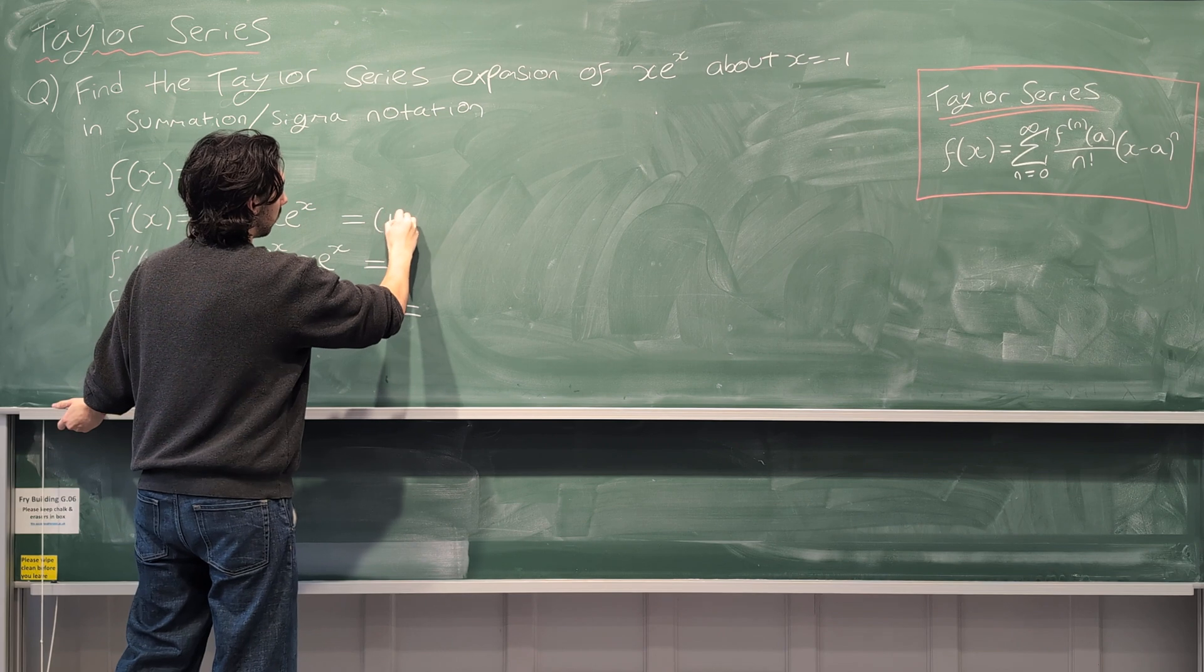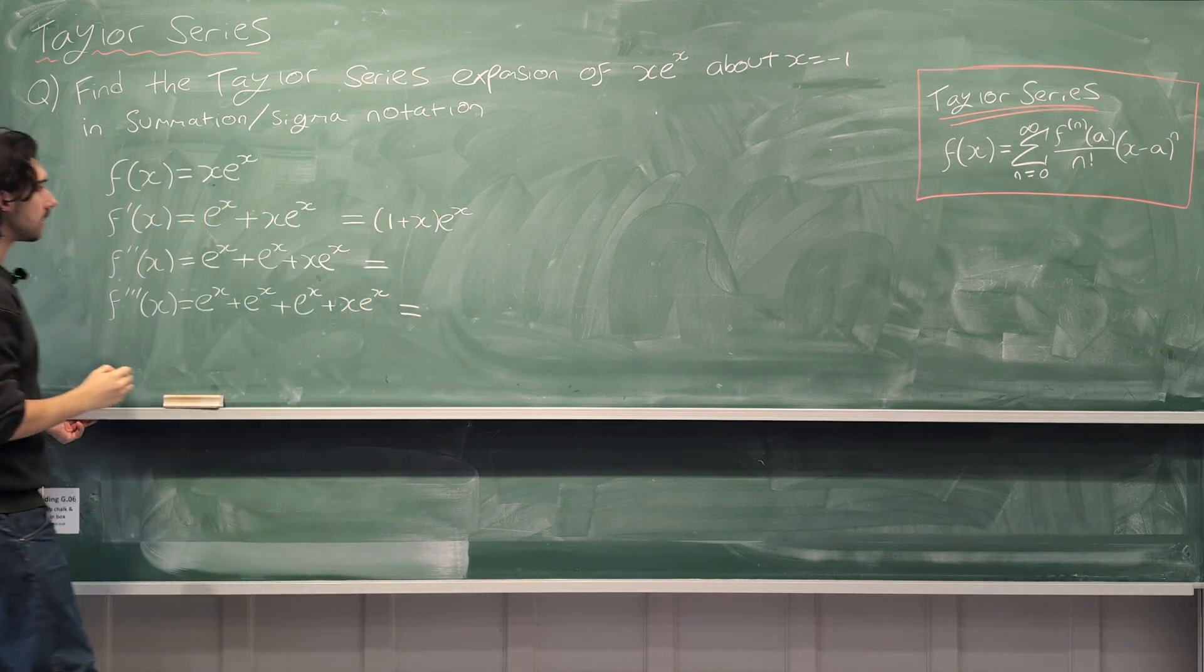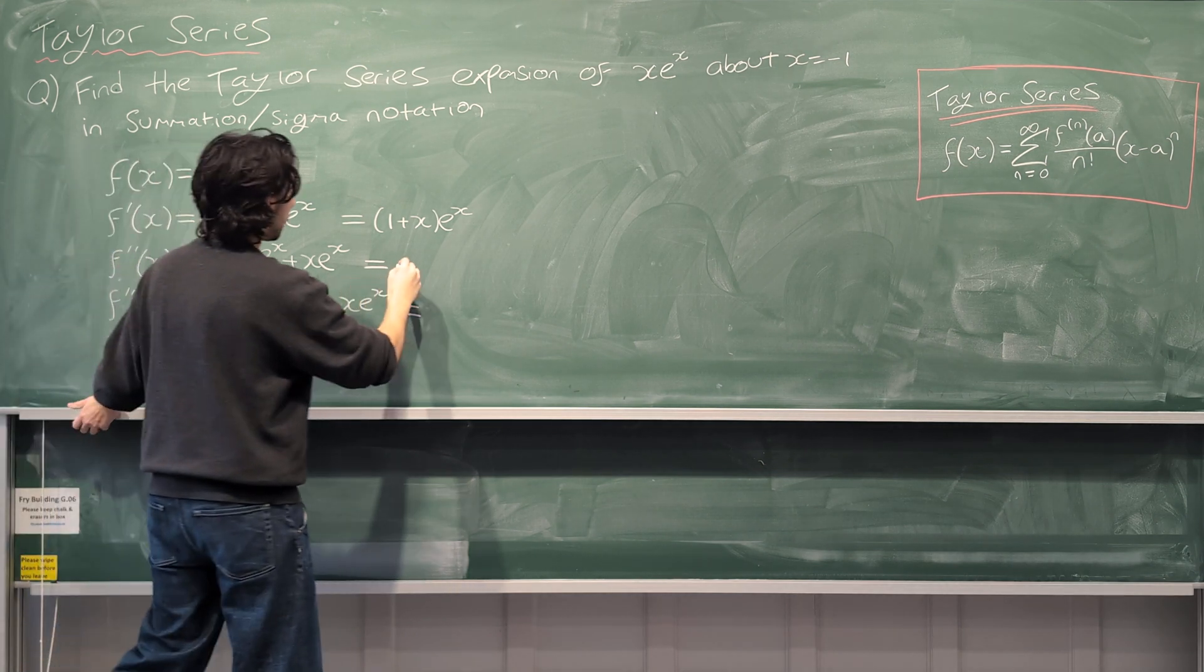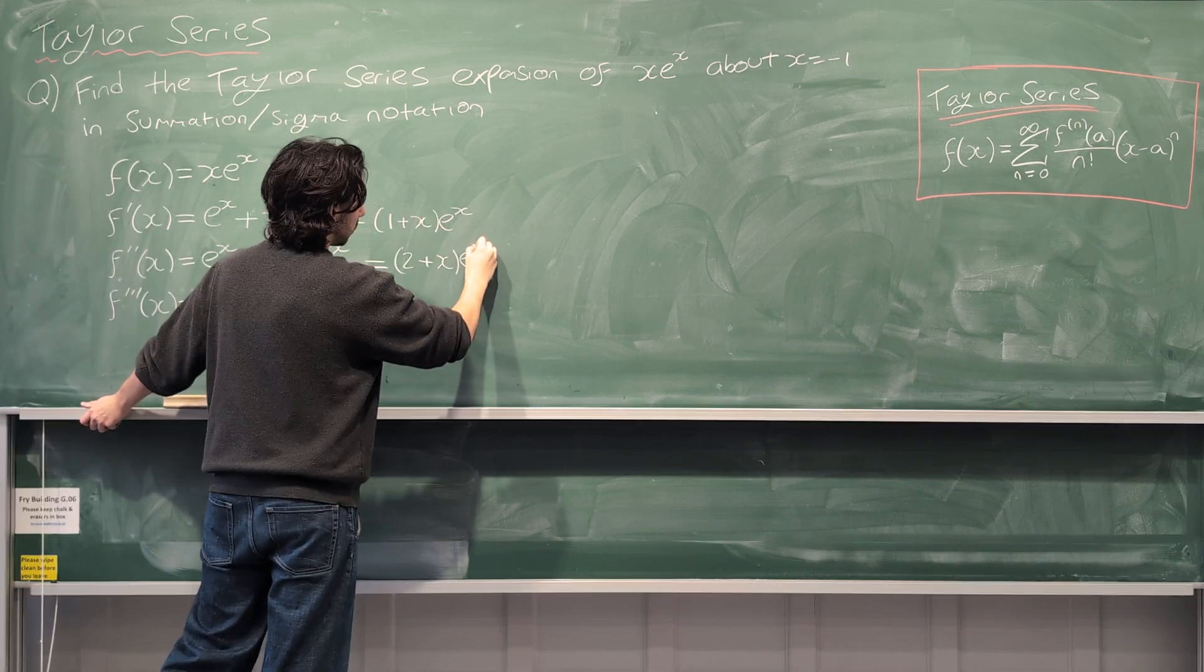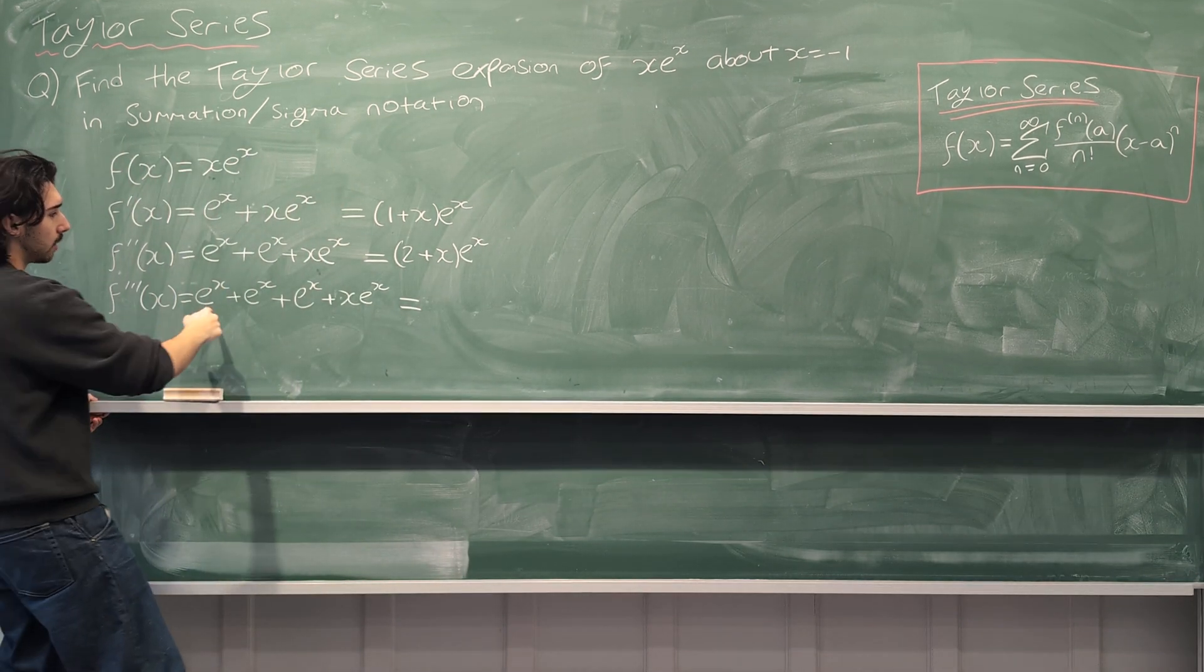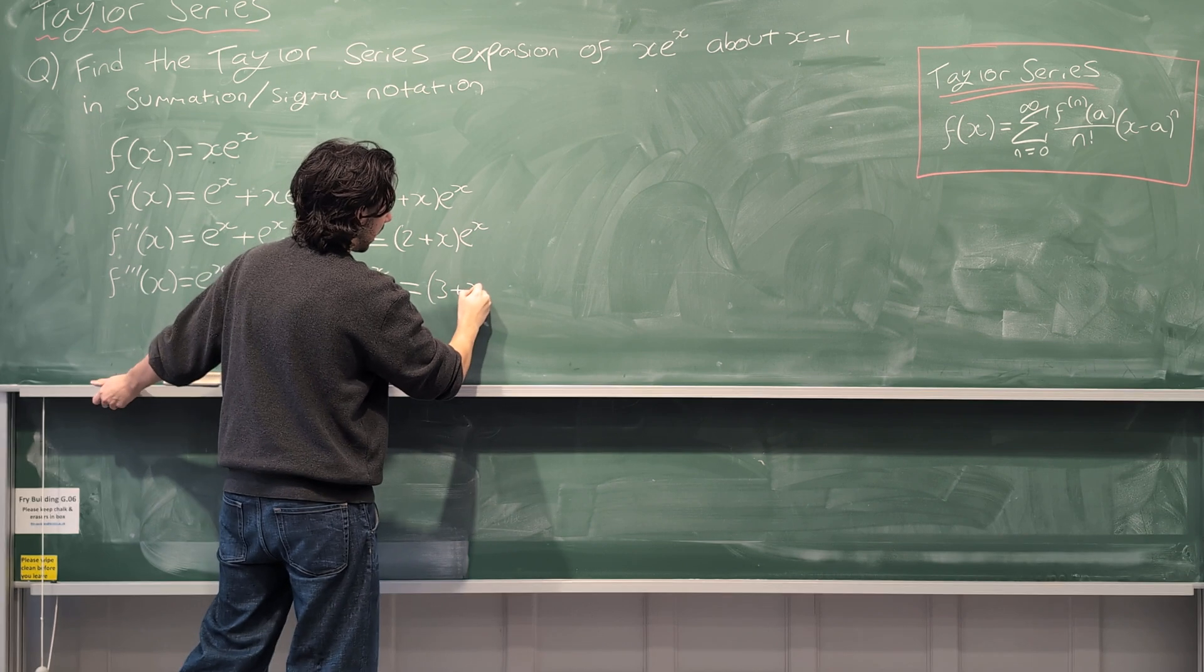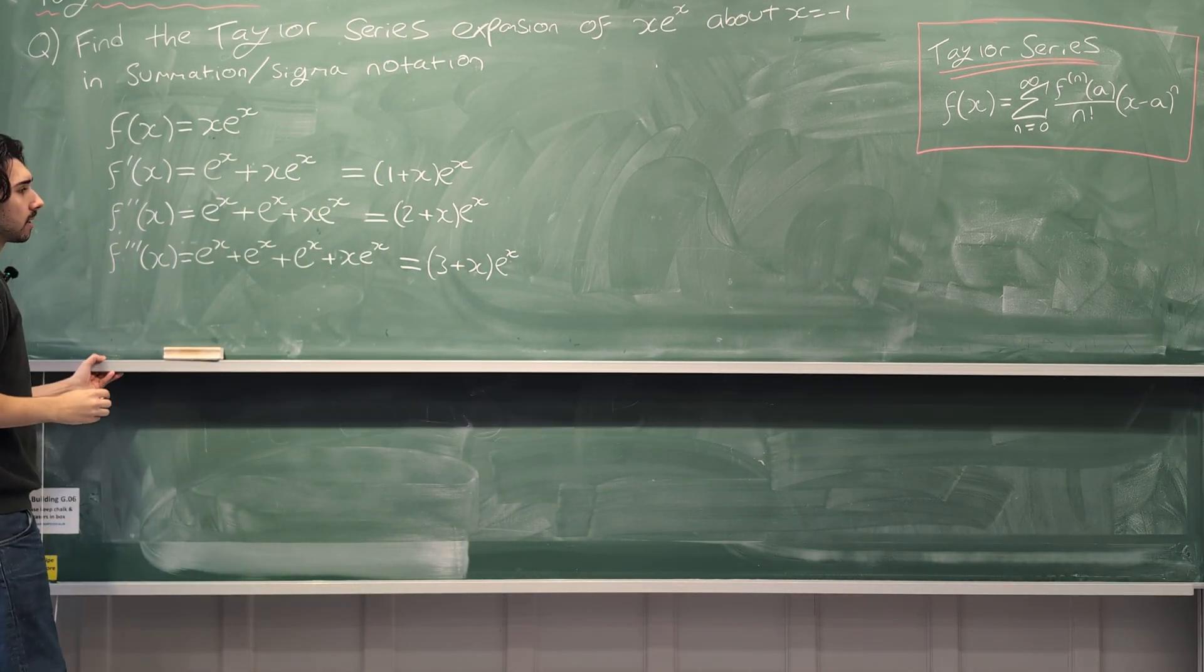So this would be (1+x)e^x. This would be (2+x)e^x because there's 2 e^x's. This would be (3+x)e^x, etc.